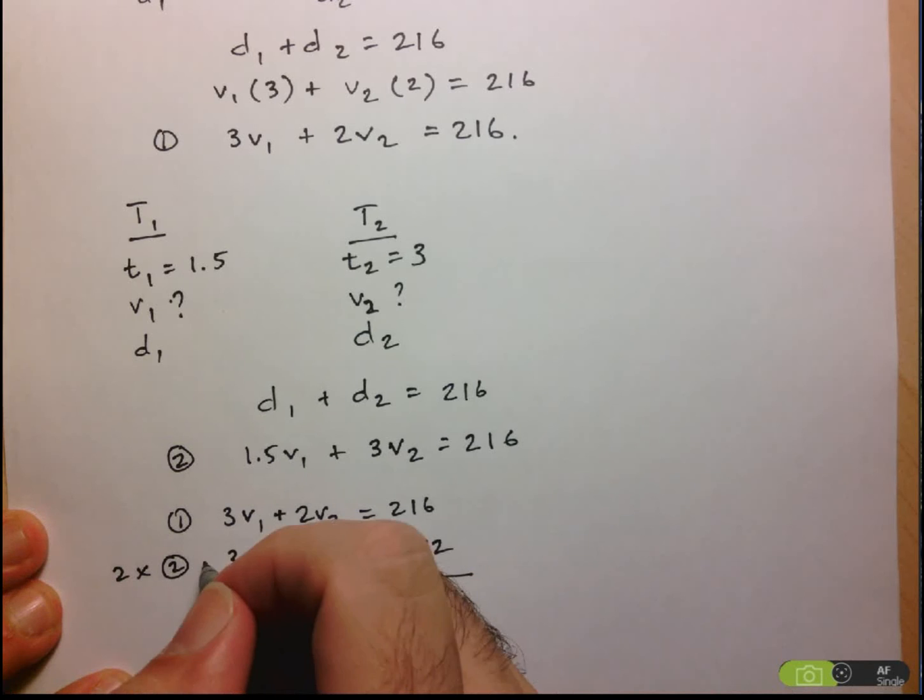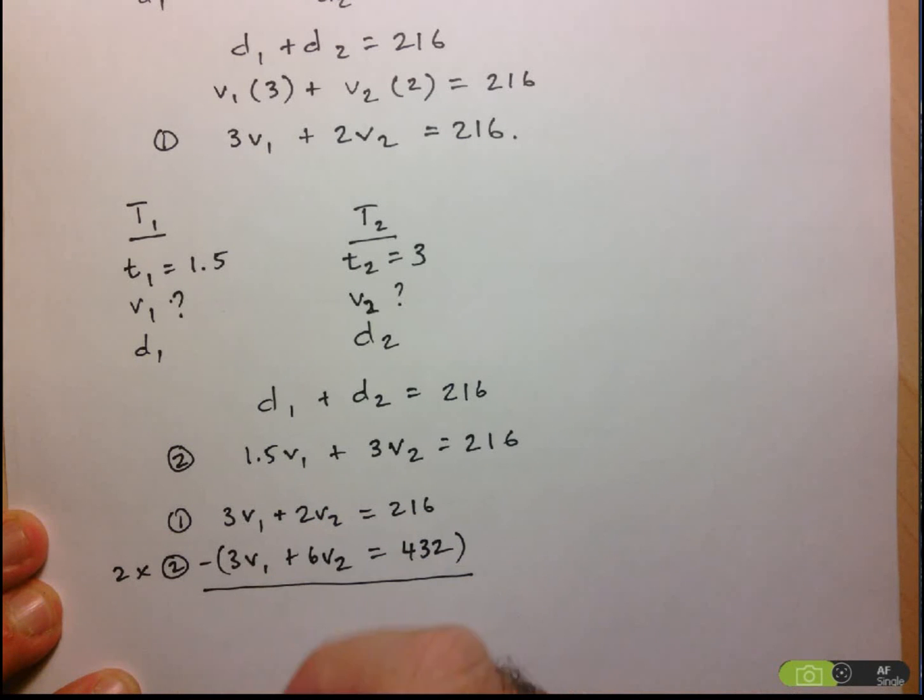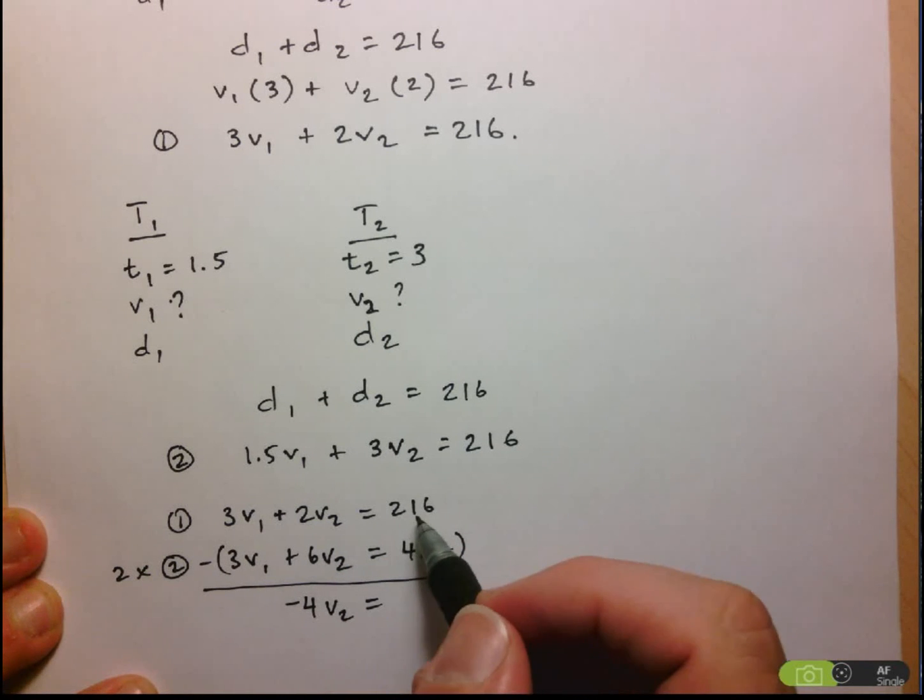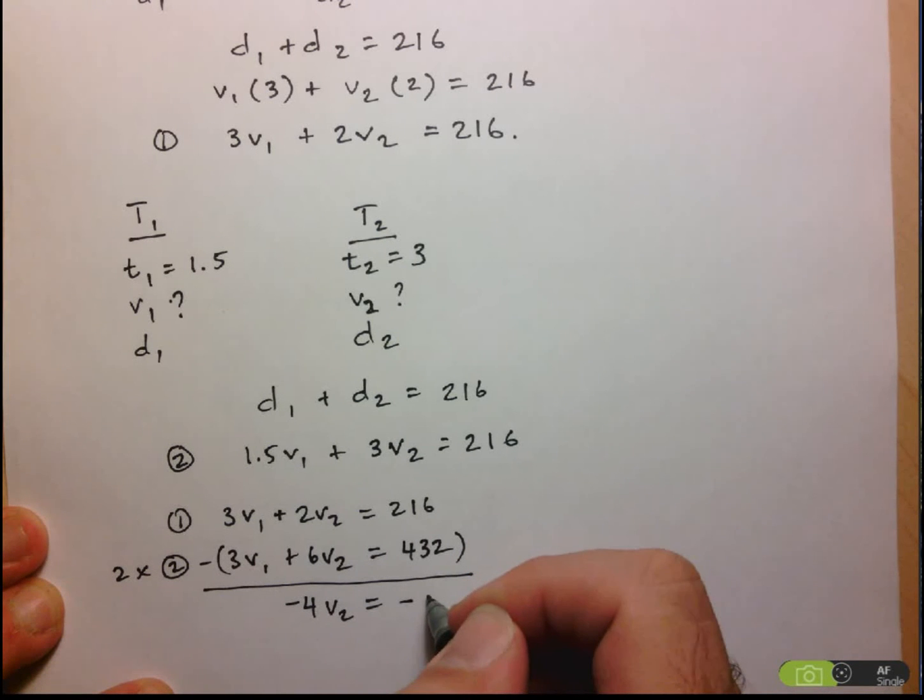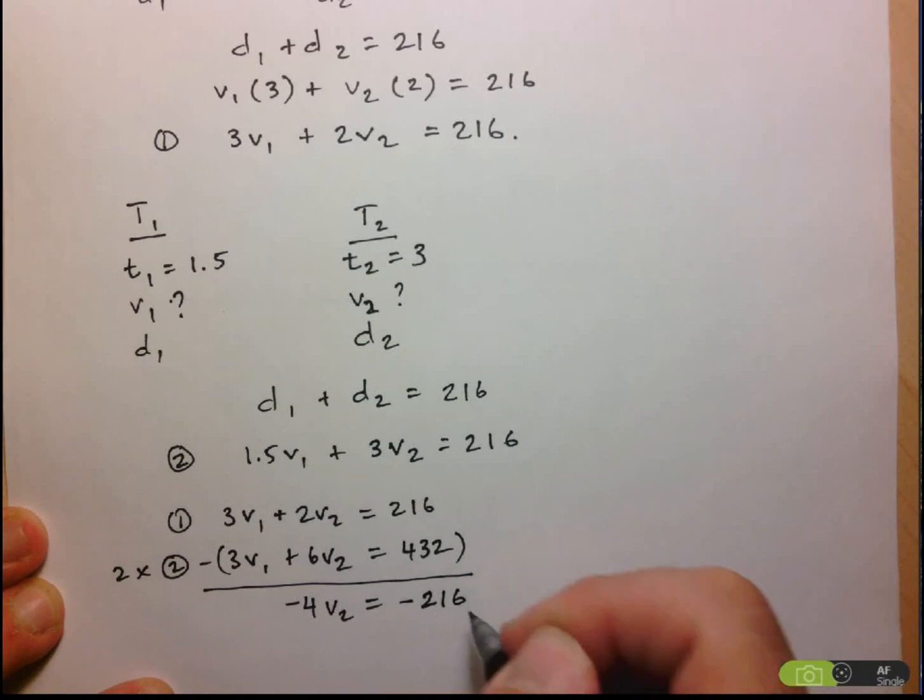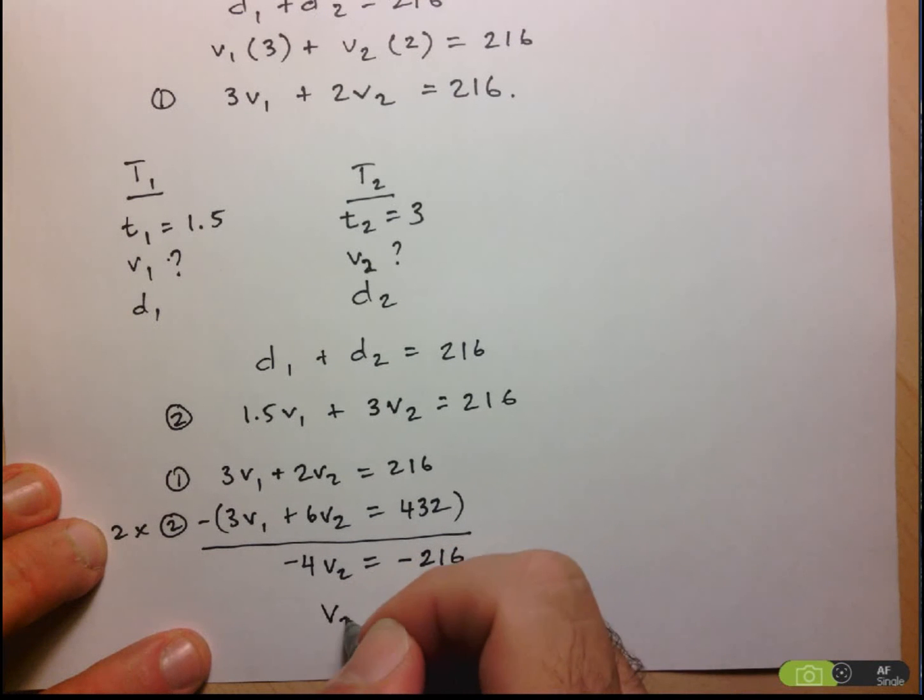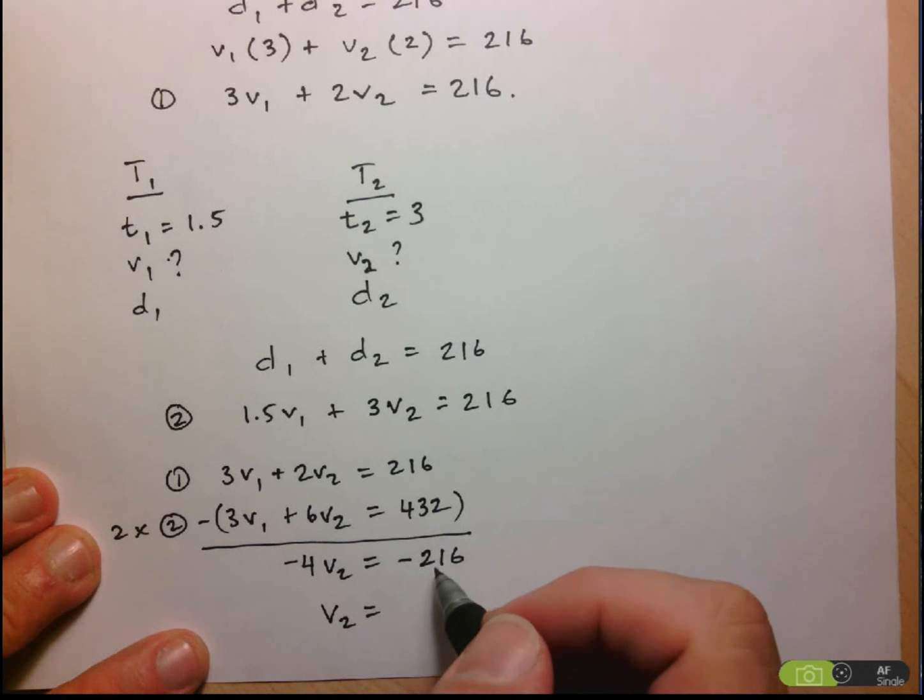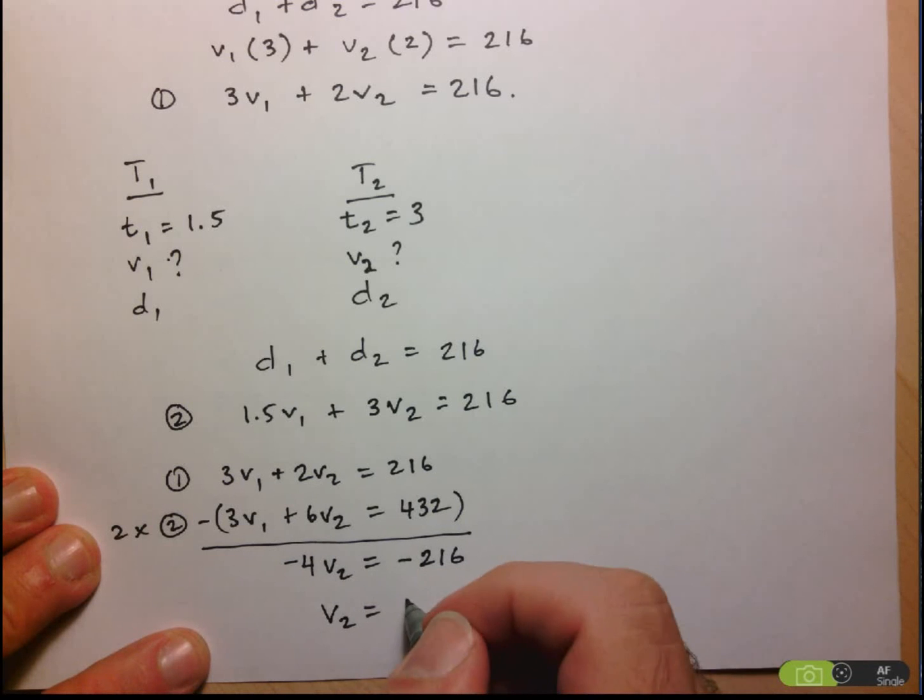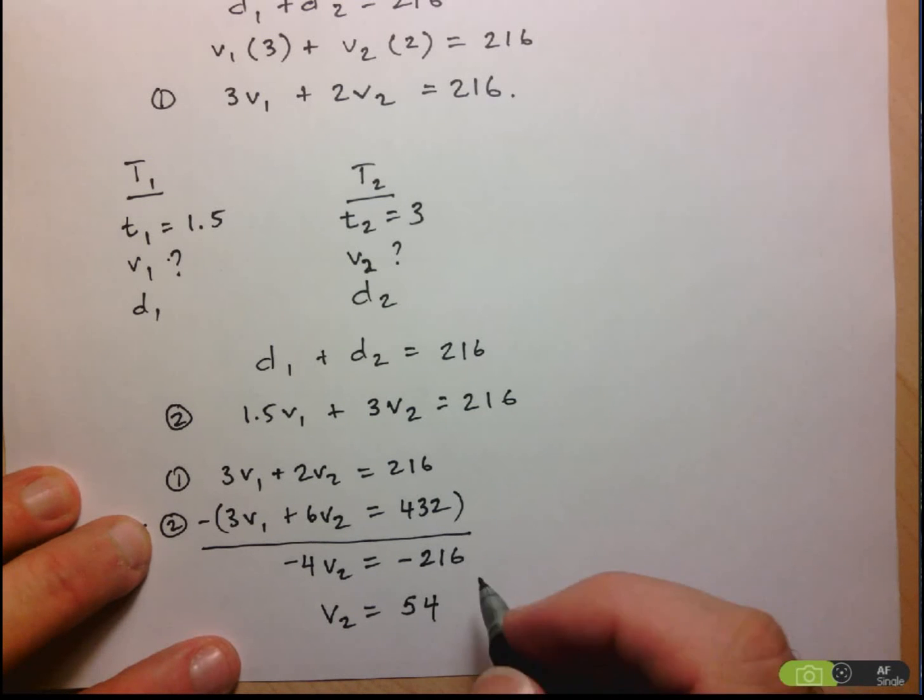And let's subtract these, and the V1s cancel out, so I'm left now with 2V2 minus 6V2, so negative 4V2 equals 216 minus 432. Well, that's twice 216, so this is just going to be negative 216, and now I can solve for V2. Let's divide this by 4, so 21 divided by 4 is 5, and then we're left with a 1, so 16 divided by 4 is 4. So we see that the velocity or the speed of the second train is 54 kilometers per hour.